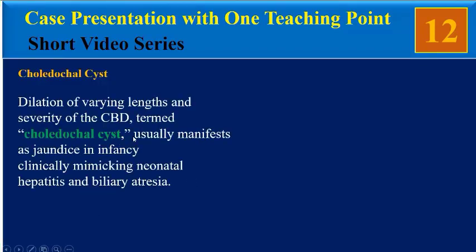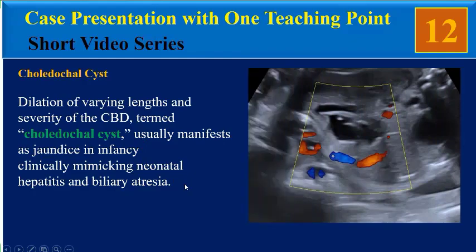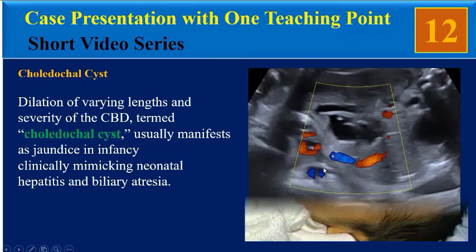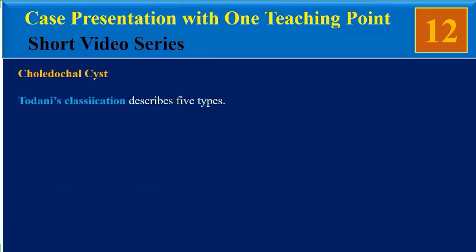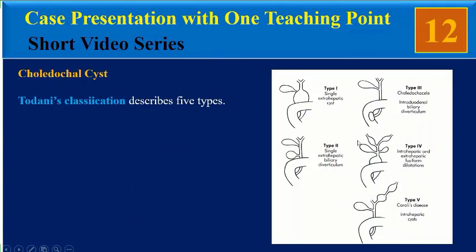Dilatation of varying lengths and severity of the CBD, termed choledochal cyst, usually manifests with jaundice in infancy, clinically mimicking neonatal hepatitis or biliary atresia. Todani's classification describes five types of choledochal cysts. In this case presentation, I will not present a complete explanation of all types, but our patient was type one.